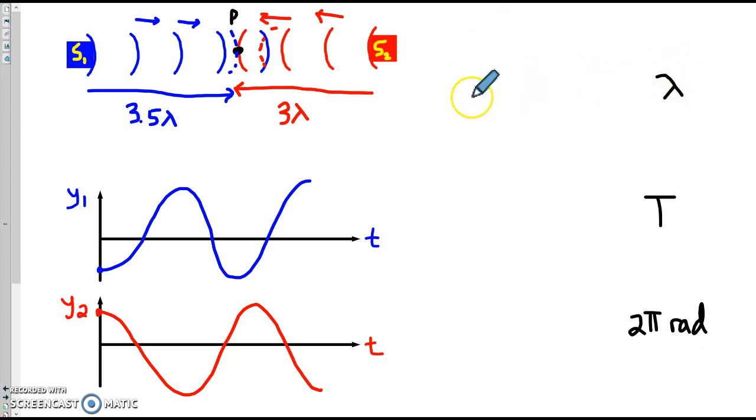When we talk about lambda, we're referring to the difference in their paths. This 3½, we could call that L1, the distance that the blue waves travel. 3, that's L2, the length of the path that the red waves travel. Delta L is just the difference, which in this case is 0.5 lambda.